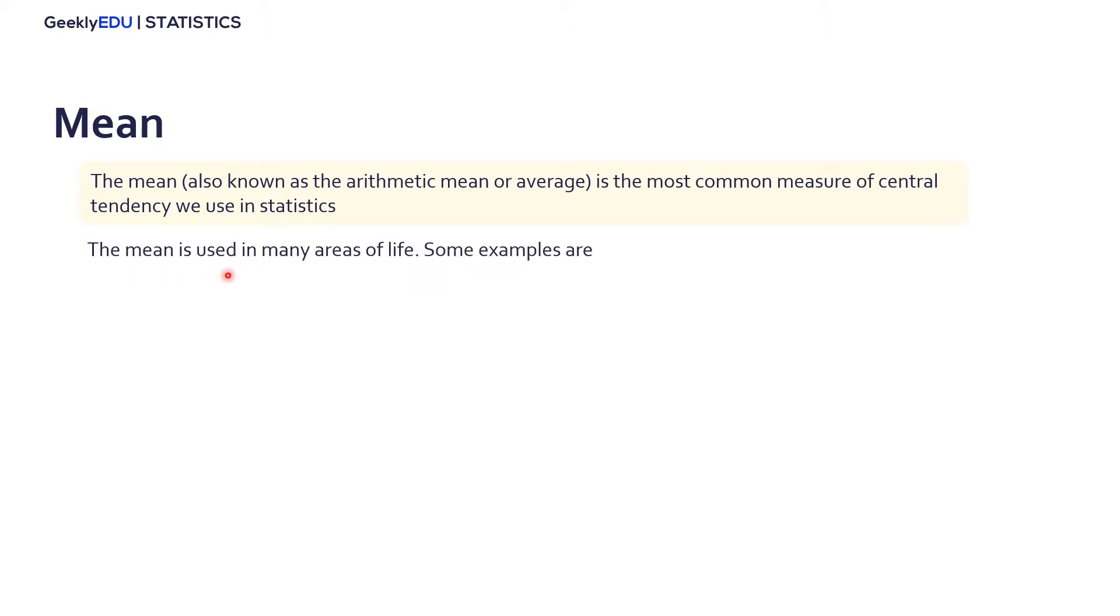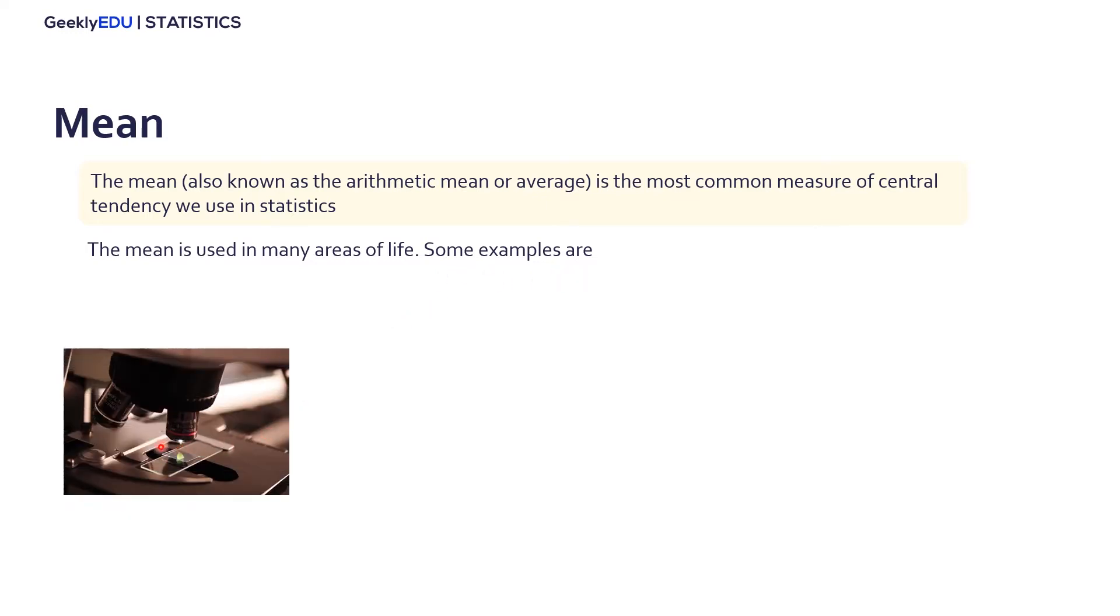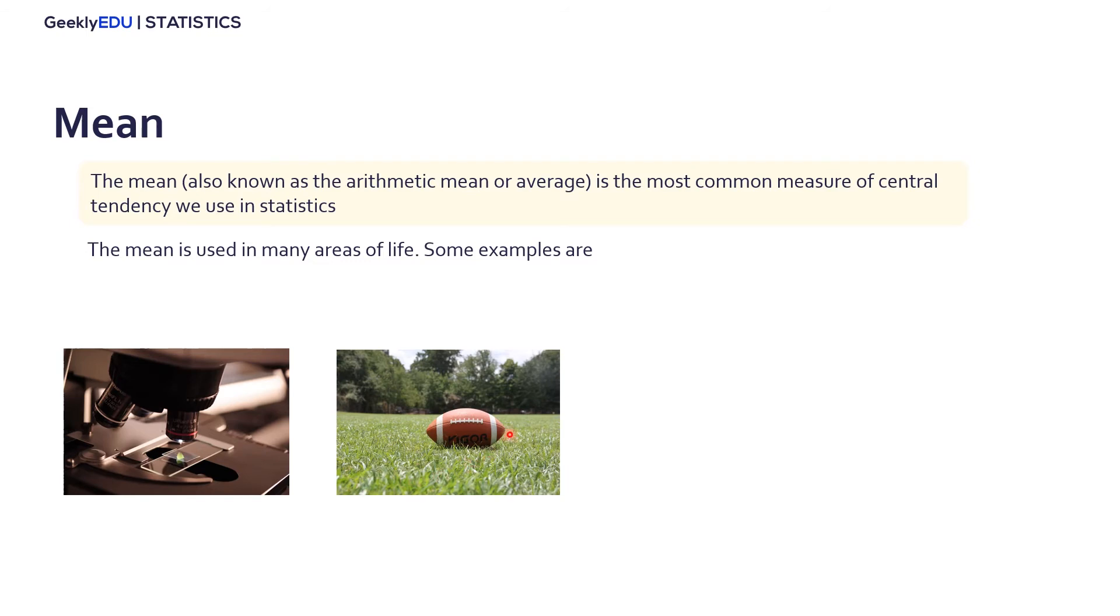The mean is used in many areas of life. Some examples are in research. For example, an NGO might want to figure out the average age of smokers, which would be calculated by the sum of the years of the smokers divided by the sample size. In sports, for example, a baseball batting average is calculated by the number of hits divided by the total number of times at bat.